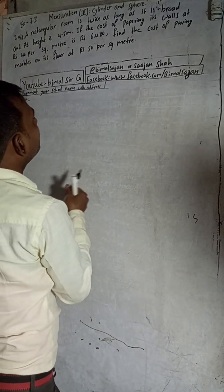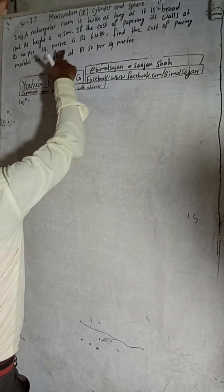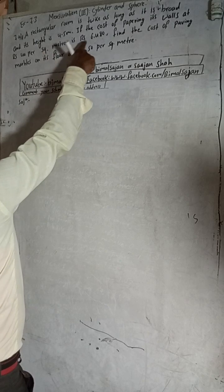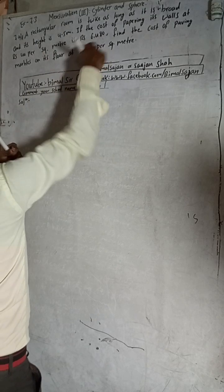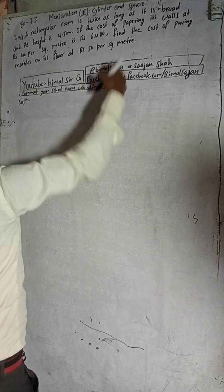Now I will start this solution. A rectangular room is twice as long as it is broad, and its height is 4.5 meters. If the cost of papering its walls at 44 rupees per square meter is 6,480, find the cost of paving marbles on its floor at 54 rupees per square meter.